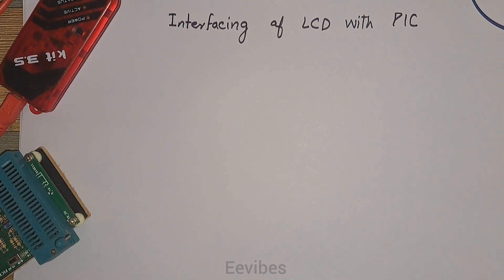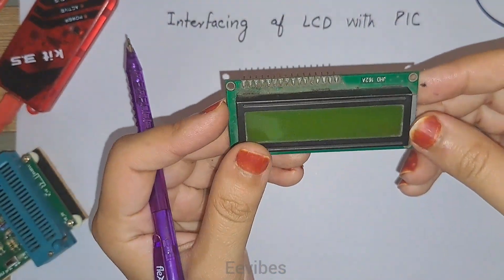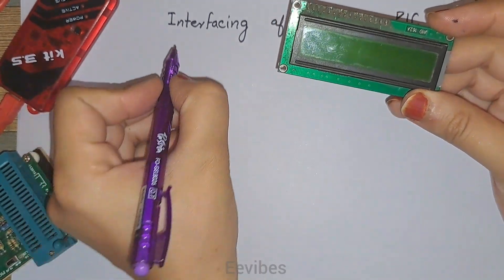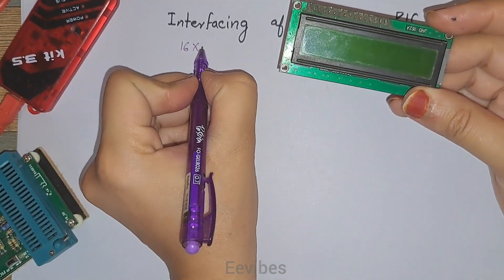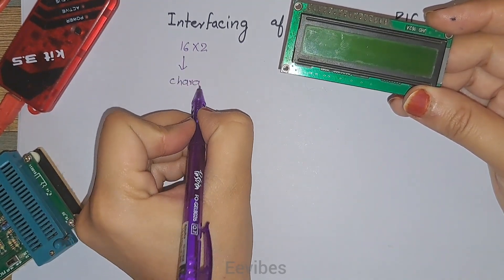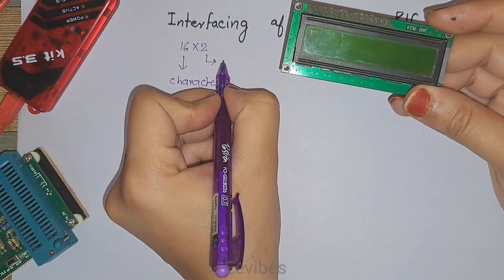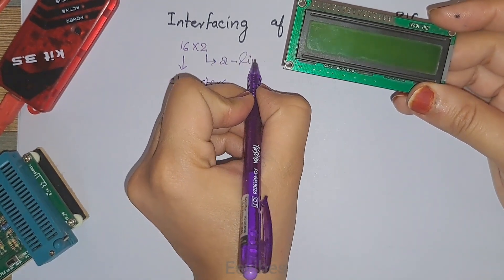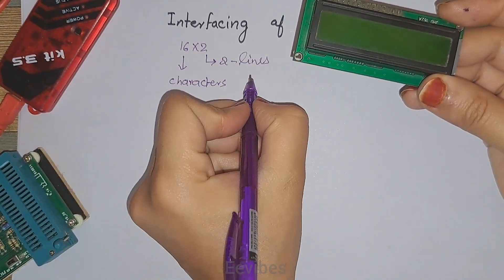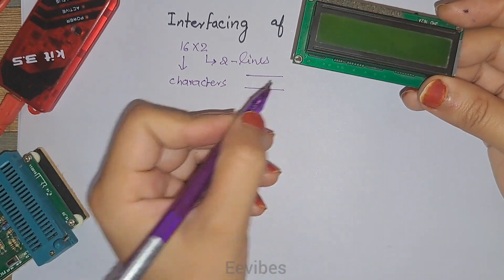Before that, you need to understand the pins of the LCD. Here you can see I have a simple LCD which is a 16x2 LCD. What does 16x2 mean? It means 16 characters can be displayed in a single line, and overall two lines are present for the display, so a single line is capable of displaying 16 characters.